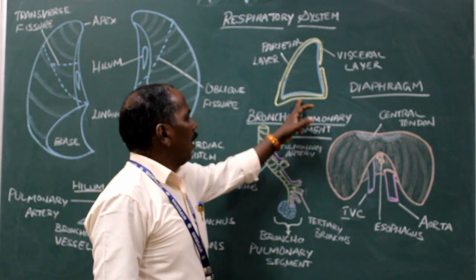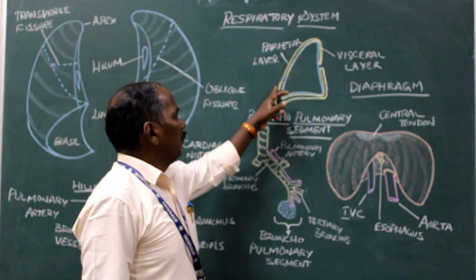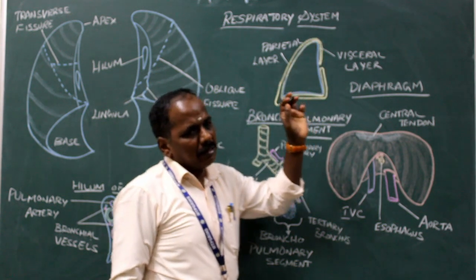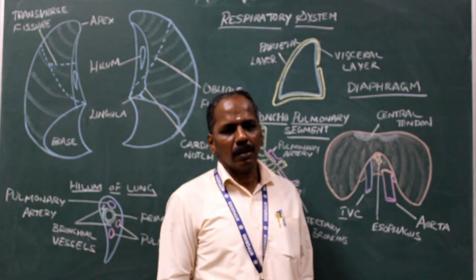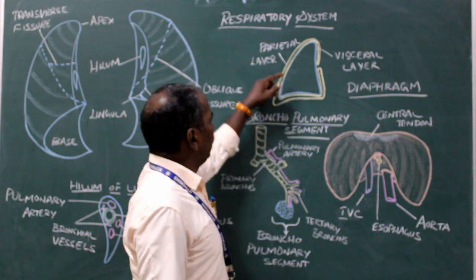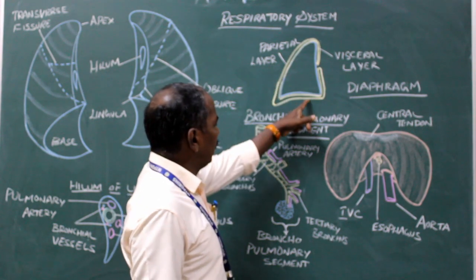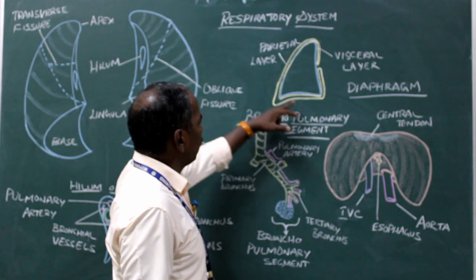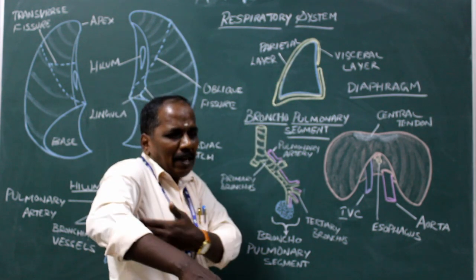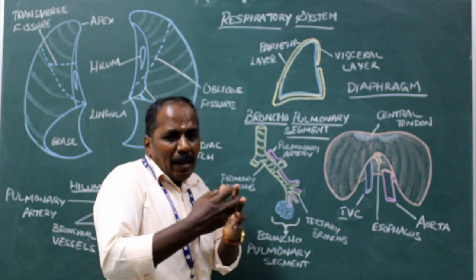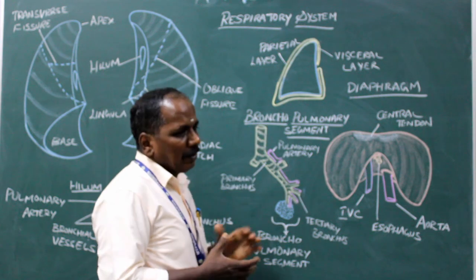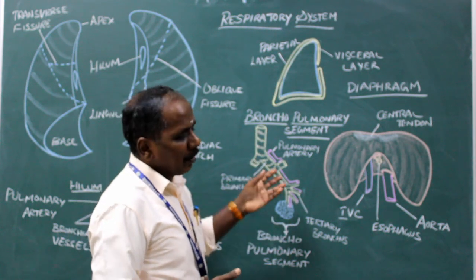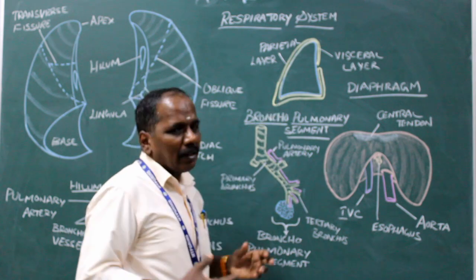The pleura is divided into: diaphragmatic pleura, costal pleura, mediastinal pleura, and cervical pleura. The costodiaphragmatic recess is the space between the costal pleura and the diaphragmatic pleura, which extends downward and lies at the mid-axillary line. Aspiration of fluid from the costodiaphragmatic recess is taken for pathological investigation after post-operative section. This is the space where fluid collects.